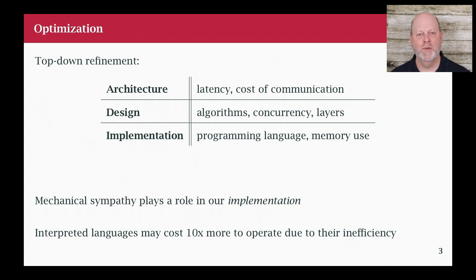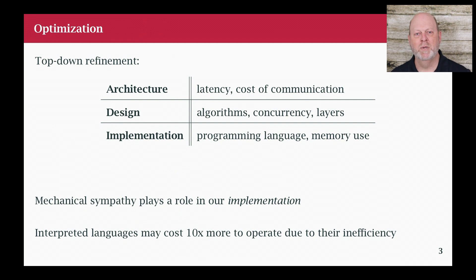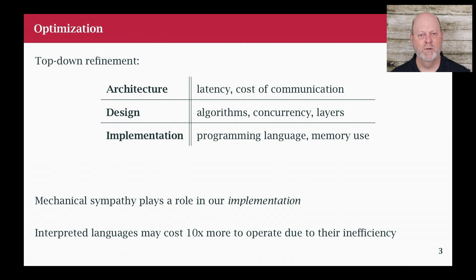When we think about optimizing, we should think about it top-down, because the biggest bang for the buck is going to come at the top — the architecture we choose. Then there are design issues: what algorithms do we use, are we concurrent, and how many layers of abstraction do we add? Then we get down to implementation, where we look at things like the programming language and how we use memory. Mechanical sympathy is about the implementation level of things.